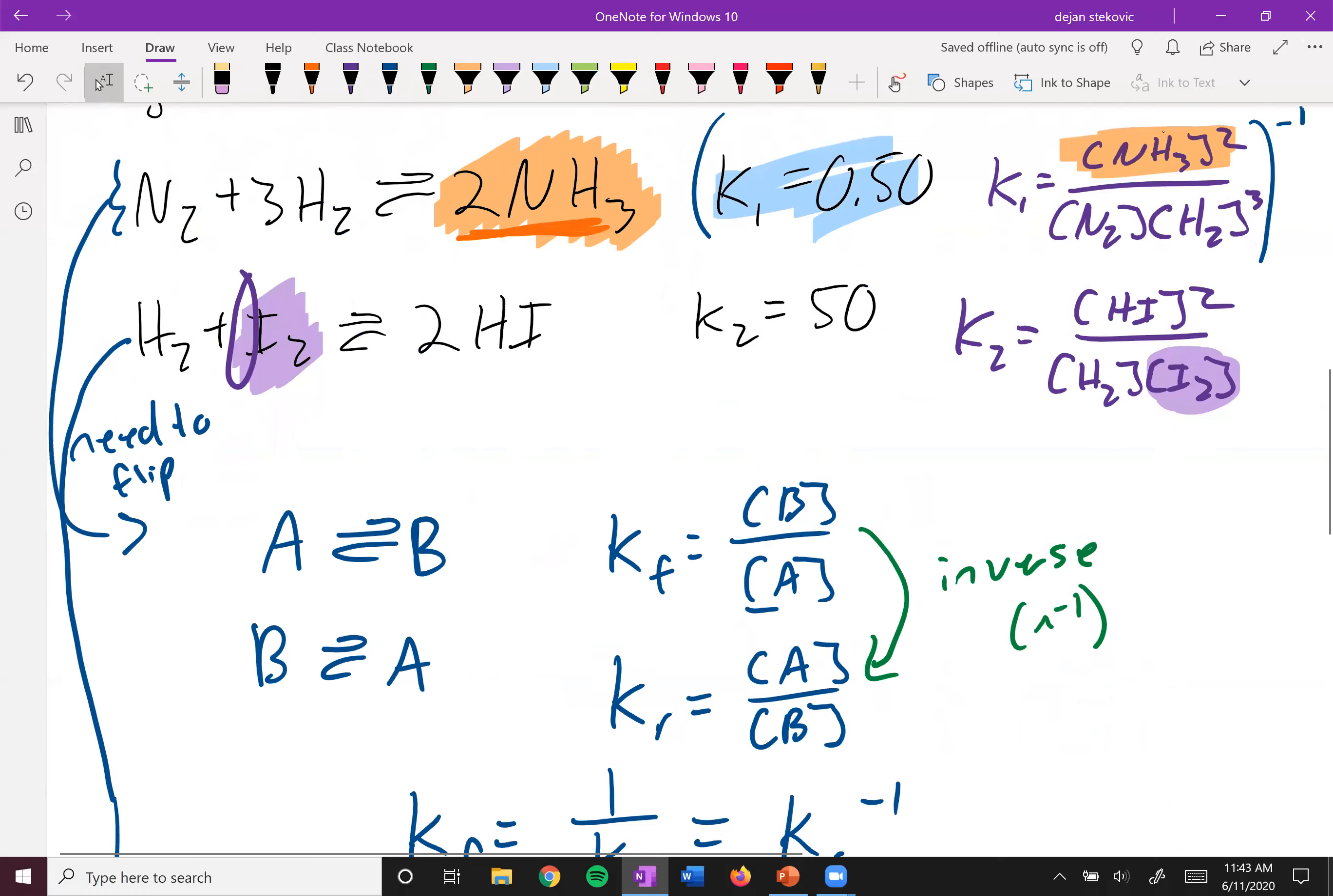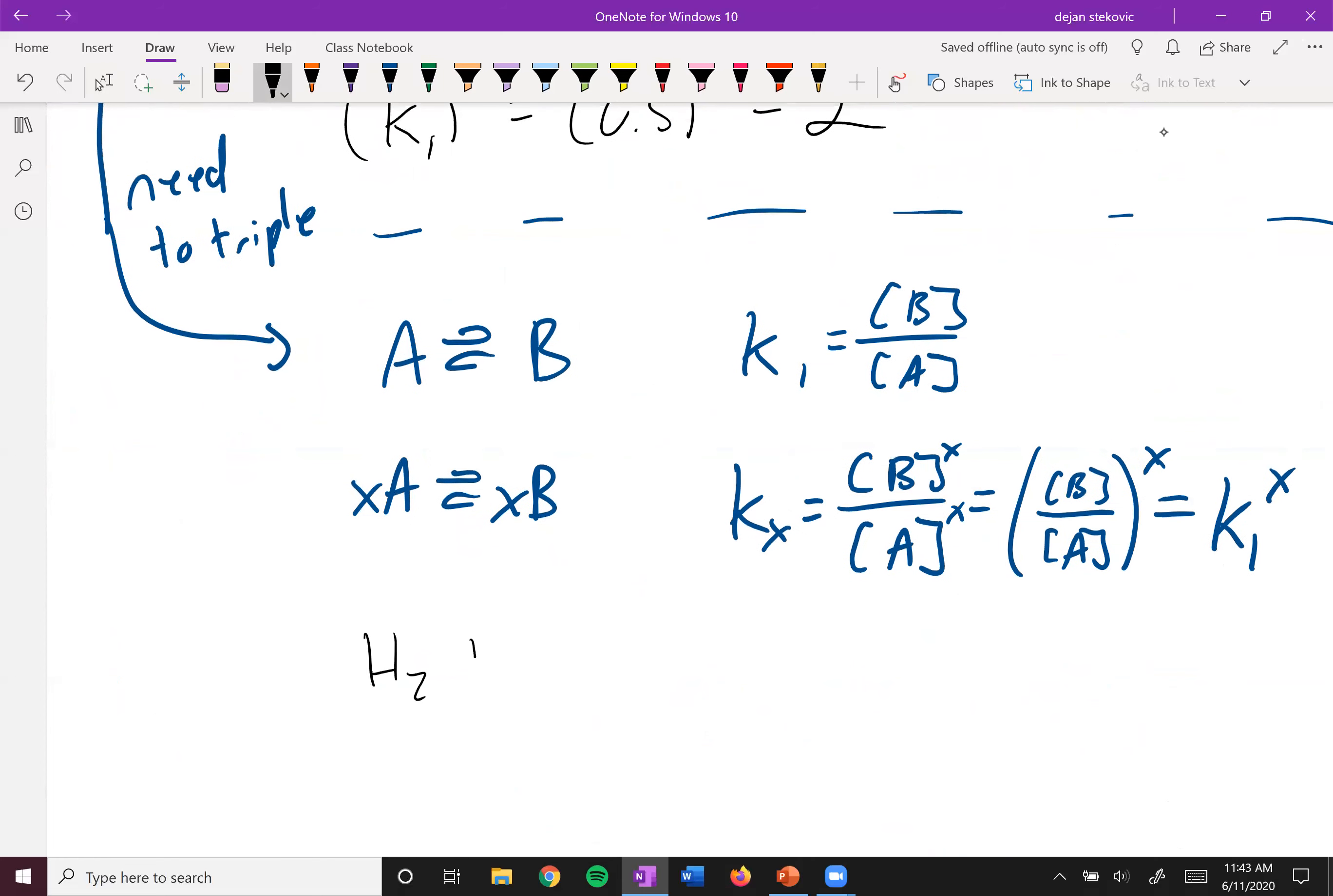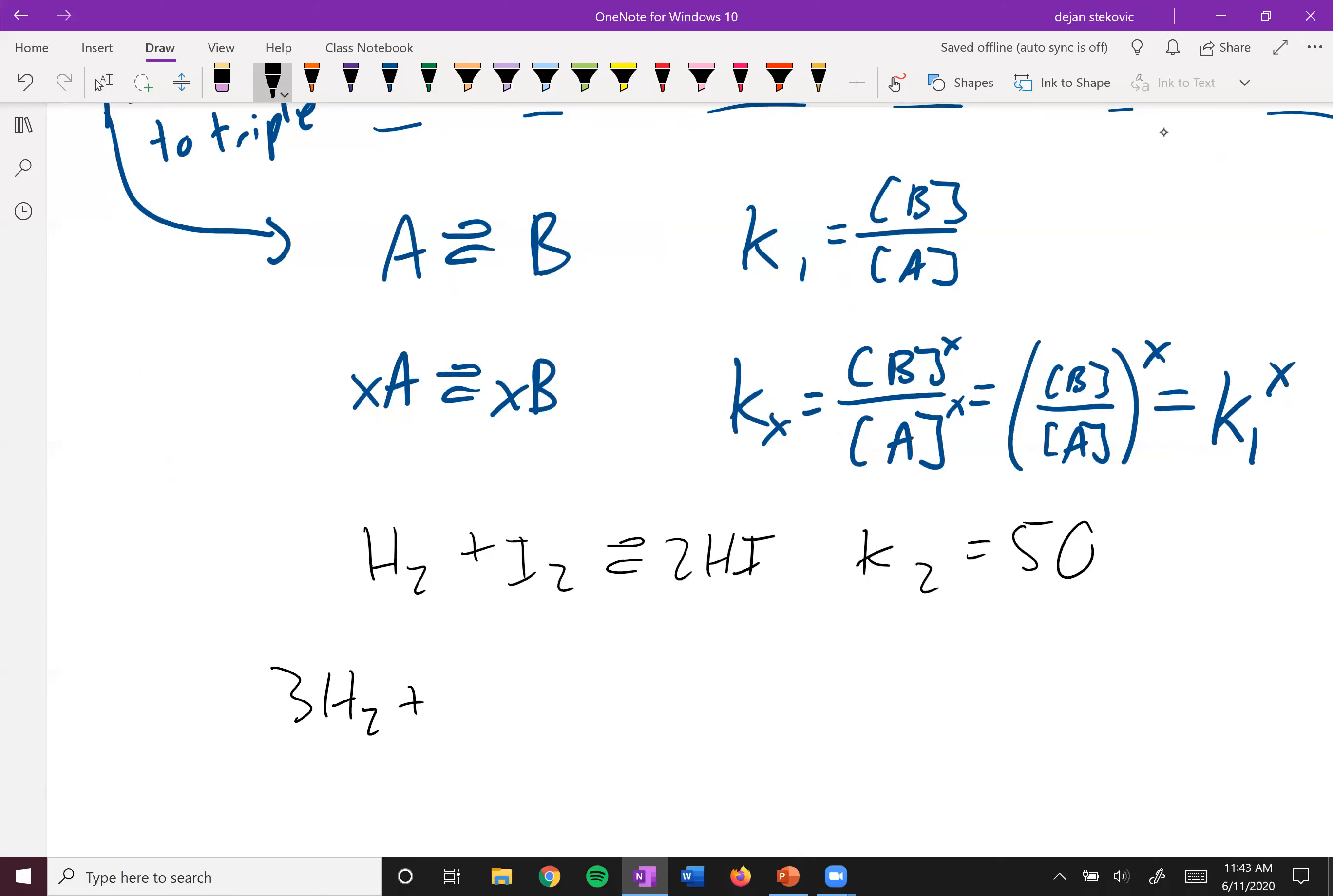So for example, we'll rewrite this equation. H2 plus I2 goes to 2HI. This KEQ, or we'll call this K2, I think, K2 is equal to 50. Well, when we triple it, we go 3H2 plus 3I2 to 6HI. Well, this K2 is, we'll say like K2 times 3, because we're tripling it. What we need to do is we need to take K2, and we need to cube it. We need to raise it to the third power. So 50 cubed ends up equaling 125,000.